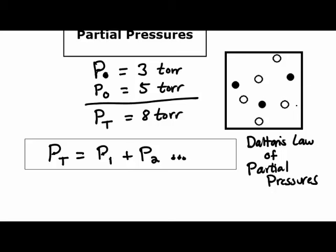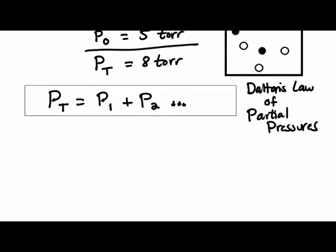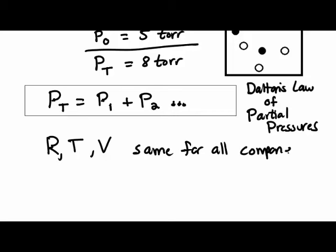We also know that R, the universal gas constant, is always the same because it is a constant. So for these components, R, T, and V are all the same for all components that are in a mixture together.